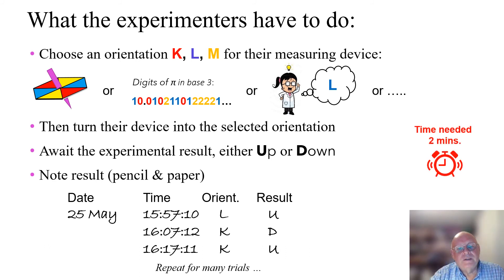I would estimate that the time the experimenters needed to complete these four steps would be less than two minutes. And this is far less than the 10 minutes or 10 light minutes that Mars and Earth are separated by. This means that the experimenters at A and B are space-like separated.